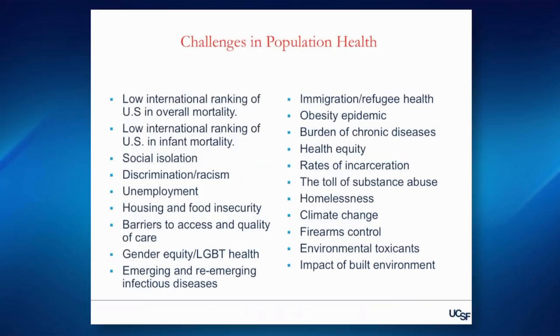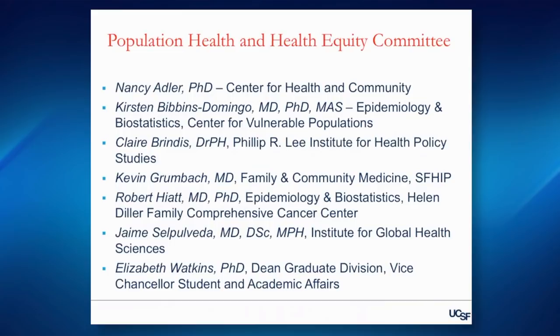What do we do in an academic medical center to make a difference in these kinds of problems? Some time ago, with the support of Dan Loewenstein, our executive vice chancellor and provost, we began thinking about how to conceive of a program in population health and health equity at UCSF. These are the individuals who put considerable work and time into thinking about this problem over the last year or so. We looked at what's going on in other sister institutions, what kinds of things are going on locally, both in terms of the amount of research and its nature. We constructed a website, the scaffolding of which is going to be available. And we've thought about what the definition and goals of such an initiative should be.